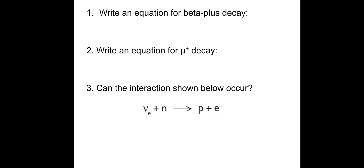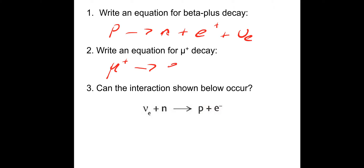Practice questions. First: write down an equation for beta plus decay. Second: write down an equation for mu plus decay, which is the anti-muon. Beta plus decay: a proton decays to a neutron, plus a positron, plus an electron neutrino. Anti-muon decay: mu-plus decays into a positron, plus an electron neutrino, and an anti-muon neutrino. Practice these — you will get better over time.